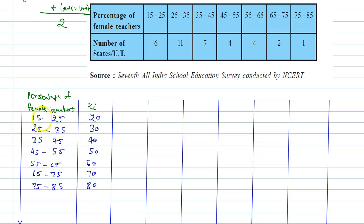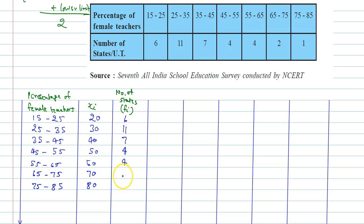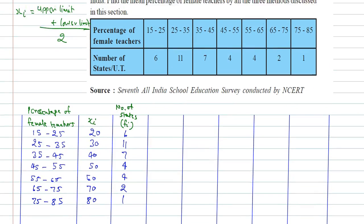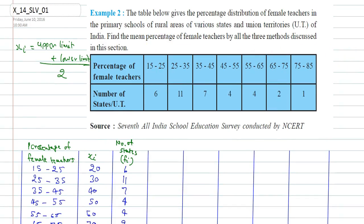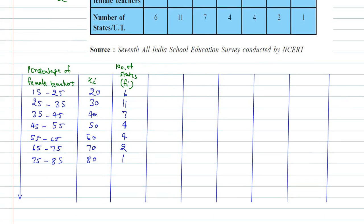These are the midpoint averages of the upper and lower limits. The number of states, Fi, is given as 6, 11, 7, 4, 4, 2, and 1. Using Fi and Xi, I can calculate the mean percentage of female teachers. Let's set up the FiXi column — the product of each Xi and its corresponding frequency.